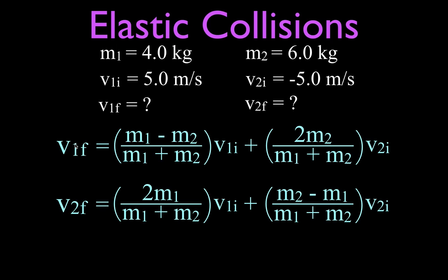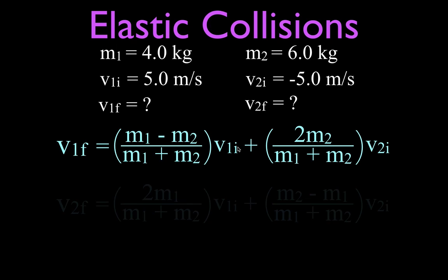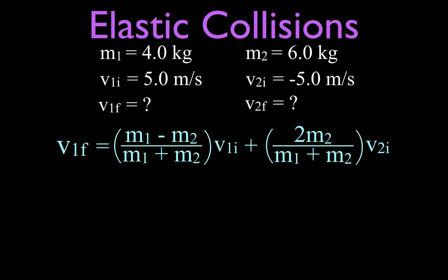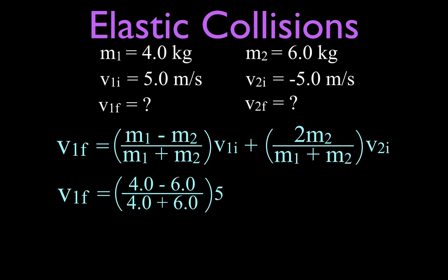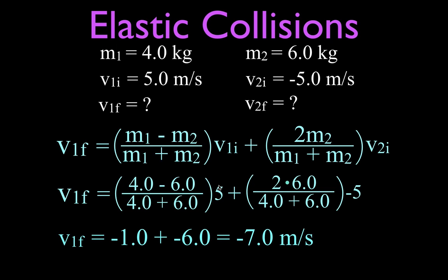This equation gives us the final velocity of the first mass, and this one gives the final velocity of the second mass — mostly just adding and subtracting masses, then multiplying by velocities. For mass number one, we plug our values in: m1 minus m2 is 4 minus 6, multiplied by the initial velocity of mass one which is 5, then 2 times m2 over the sum of the two masses, multiplied by minus 5. You can see we get negative terms: 4 minus 6 is minus 2.